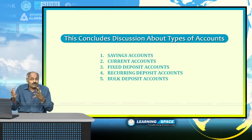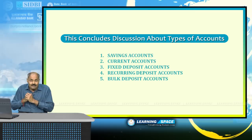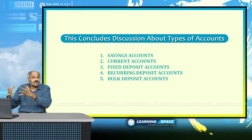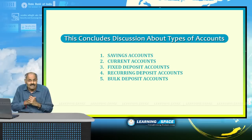To summarize, we have discussed demand deposits — savings and current accounts — and time deposits including fixed deposits, recurring deposits, and bulk deposits. These three fall in the category of time deposits or time liabilities. This concludes the third module. Do join for the fourth module. Have a nice day.